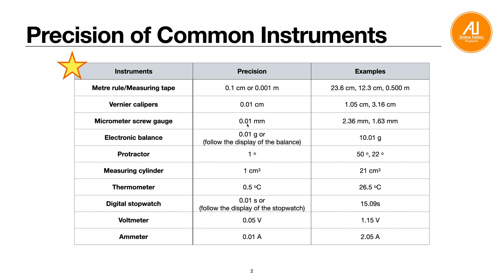For the micrometer screw gauge, precision is 0.01 mm, so both vernier calipers and micrometer screw gauge are 2 decimal places, but vernier calipers will be in cm and the micrometer screw gauge will be in mm. For an electronic balance, precision is usually 0.01 g — 2 decimal places — or you can just follow the display of the balance. For example, 10.01 g.